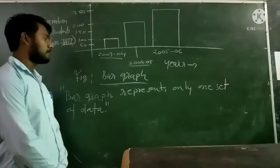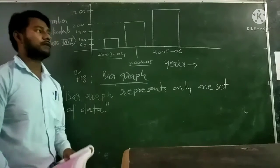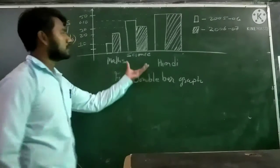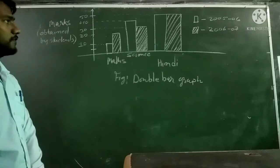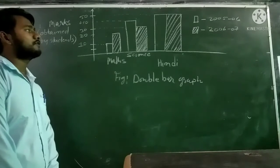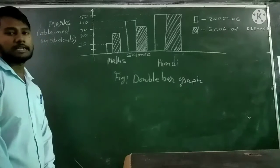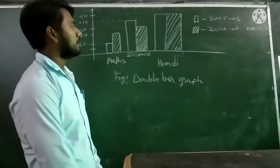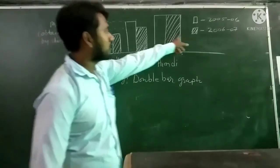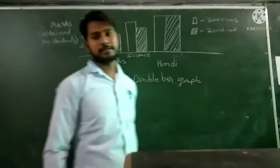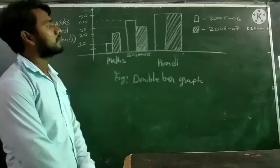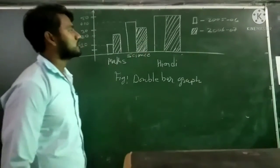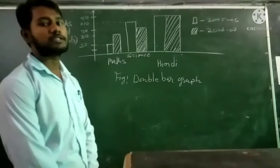Now we will look at the double bar graph. Where do we use the double bar graph? This is the diagram of a double bar graph where two sets of data are represented. The blank bar denotes the session 2005-06 and the colored bar shows the session 2006-07.